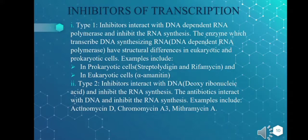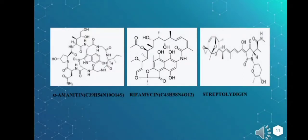Now we'll look at each inhibitor in detail. Alpha-amanitin is a molecule derived from the death cap mushroom and acts as a potent inhibitor of RNA polymerases. Alpha-amanitin can inhibit RNA polymerase II activity in both initiation and elongation stages. It interacts with the bridge helix in RNA polymerase II, reducing the rate of transcription from several thousands to just a few nucleotides per minute.